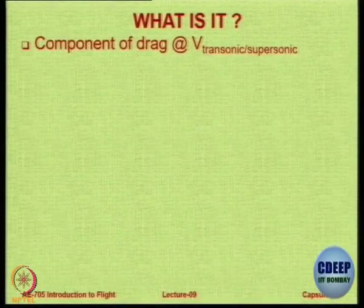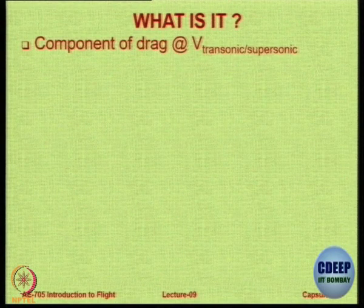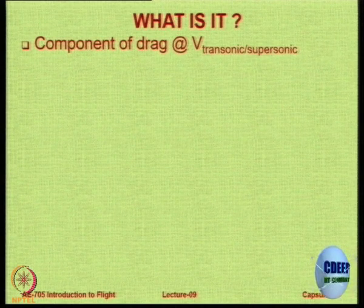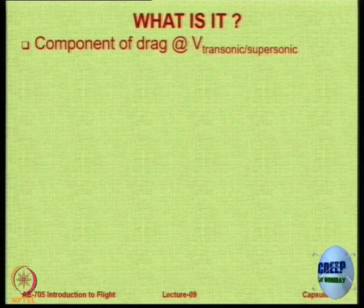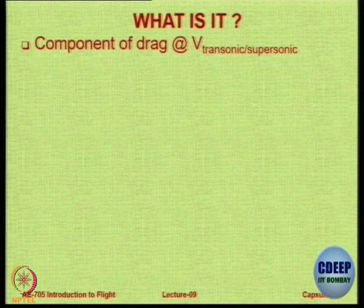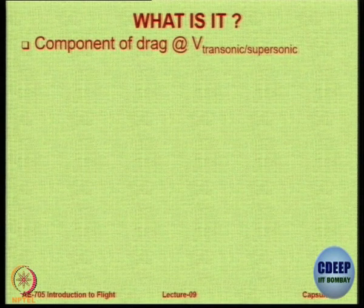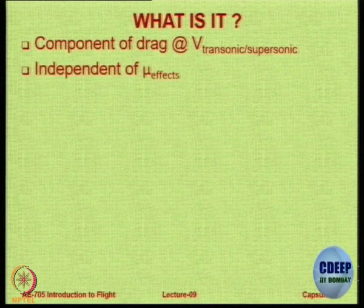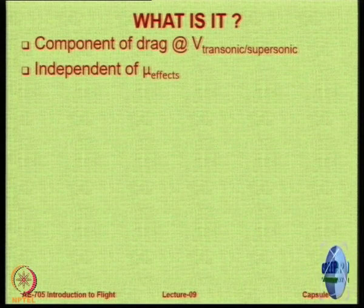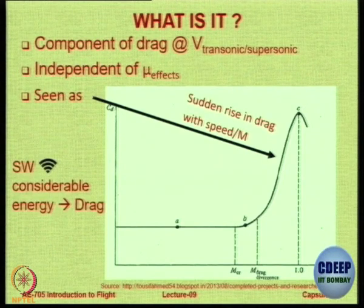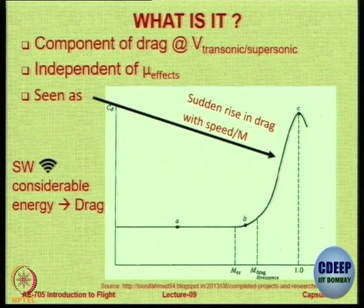Wave drag is a component of drag at transonic or supersonic speeds. The critical Mach number is normally below 1, because if the free stream Mach number itself is 1, sonic conditions are only at the leading edge — and we already have acceleration of flow well before that. Wave drag is independent of viscous effects. It is seen as a sudden rise in drag with Mach number, and the shock wave radiates considerable energy, which manifests itself as drag.